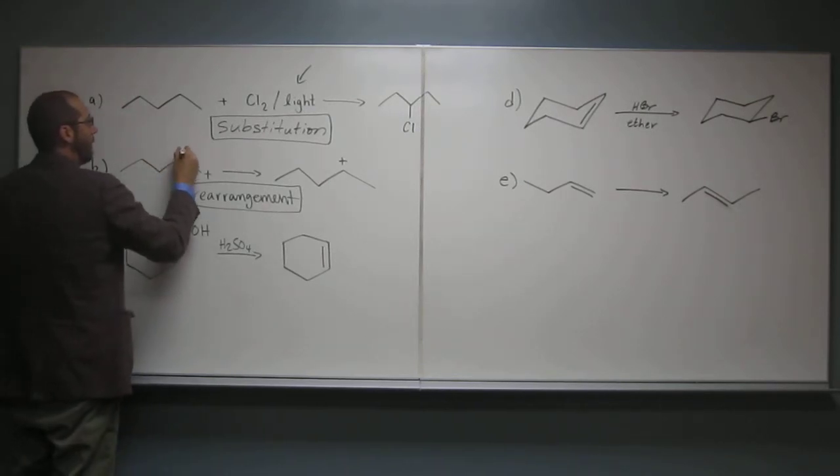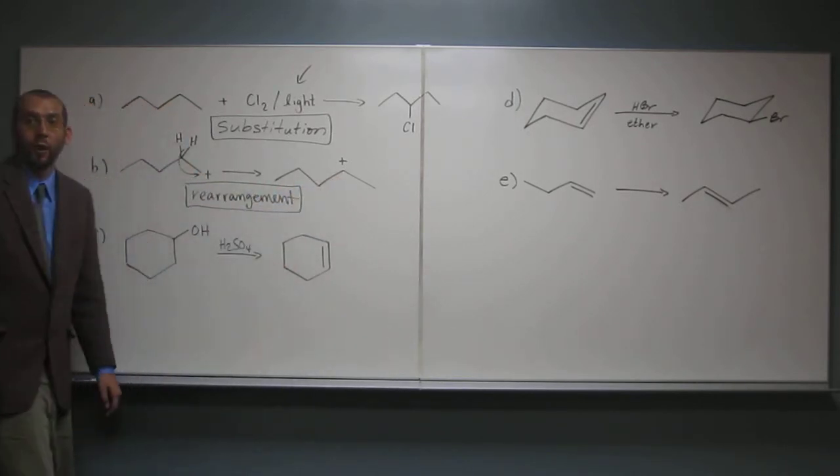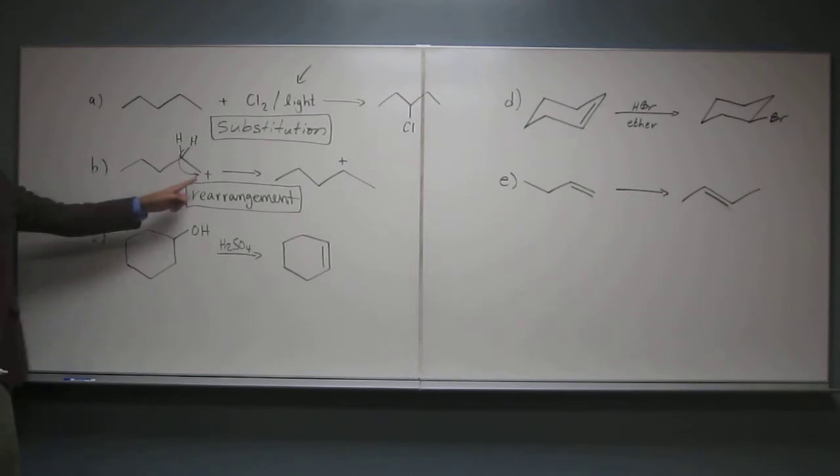So, if you want to draw the mechanism, right, you can think where there's those two hydrogens there. One of those hydrogens is going to go over to there and make the carbocation, instead of a primary, a secondary. Okay, so that secondary, remember, is a more stable carbocation than the primary.